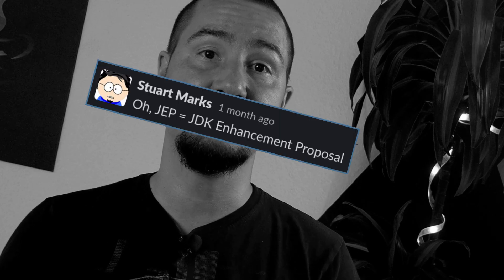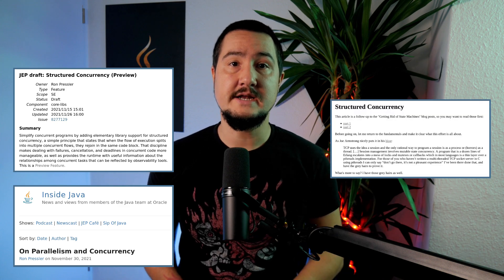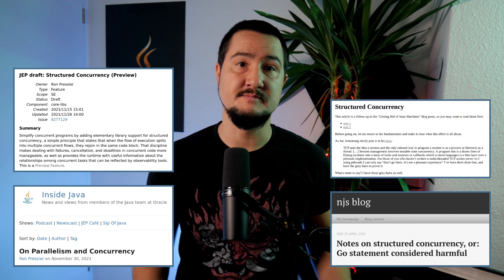What follows is based on an article and a JDK Enhancement Proposal draft that Ron Pressler, lead of Project Loom, published in recent weeks. The term structured concurrency was coined by Martin Sustrick and later popularized in a blog post by Nathaniel Smith. Links to all of that in the description.